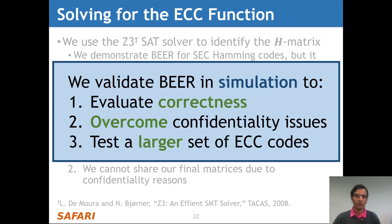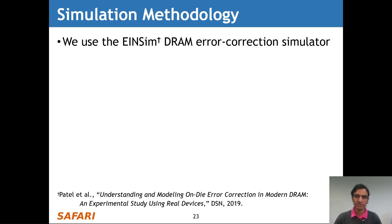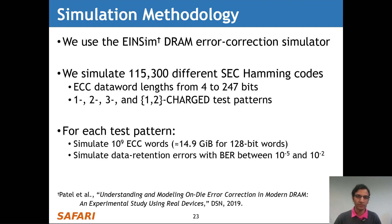We validate BEER in simulation using the INSIM DRAM error correction simulator. We simulate over 100,000 different single error-correcting Hamming codes representative of on-die ECC, with ECC data word lengths ranging from 4 to 247 bits. We use the 1, 2, 3, and combined 1-and-2 charge test patterns. For each test pattern, we simulate 10^9 ECC words with bit error rates between 10^-5 and 10^-2, approximating those of our real experiments.